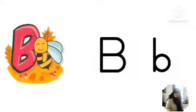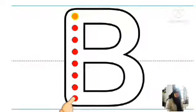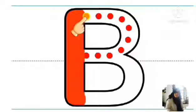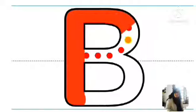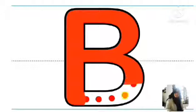Now let's learn to write the letter B. This is how you write capital B. Start from the top and write a standing line. Go back to the starting point and draw a right curve. Then end in the middle of the standing line. Draw another right curve and bring to the end of the standing line.